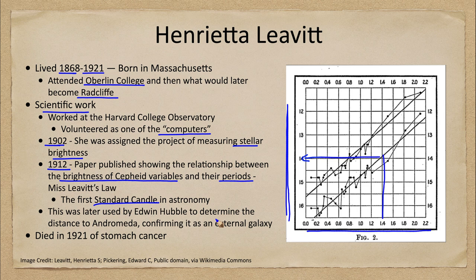We could get distances directly as long as the Cepheid can be seen, and Cepheid variables can be seen out to great distances — millions of light years. In fact, this was later used by Edwin Hubble to determine the distance to the Andromeda galaxy, two and a half million light years away, confirming it as an external galaxy and not something within our own galaxy.